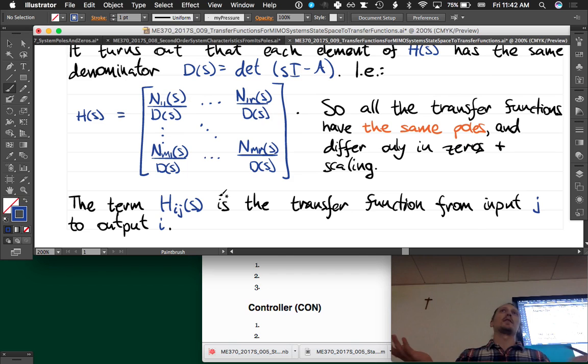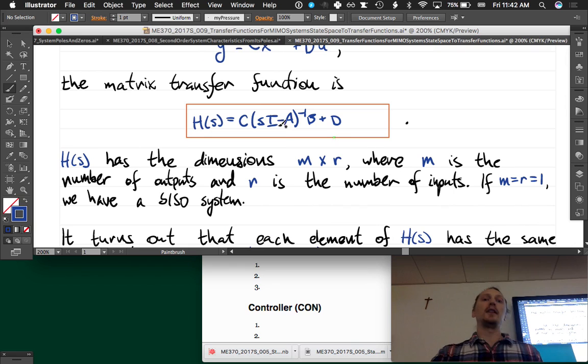So that is how to determine transfer functions for multiple input, multiple output systems. This is the so-called matrix transfer function. It's easy, although this can get messy if it's large, if you have a large order system. But for like a second order system, it's pretty easy, not too bad.